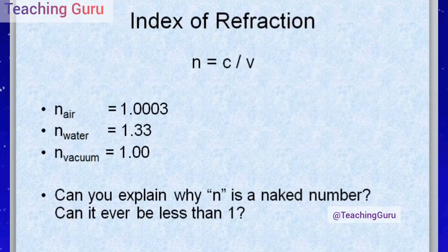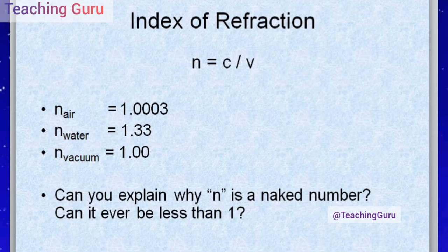The index of refraction is n = c/v, where c is the speed of light and v is the velocity of the ray in that medium. For general purposes, the refractive index of air is taken to be 1 (more precisely 1.003), water is 1.33, and vacuum is exactly 1.